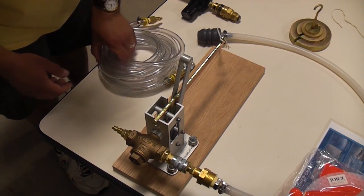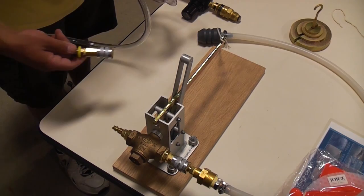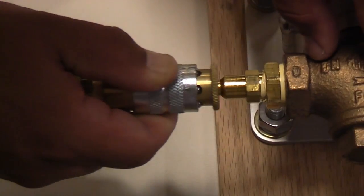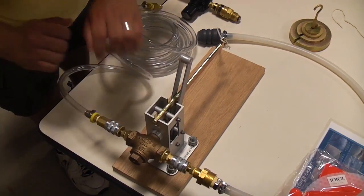Step three is to connect the input hose to the input side of the shutoff valve. Again, just pull back on the metal sleeve and insert.